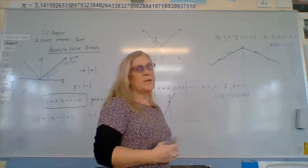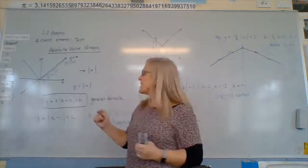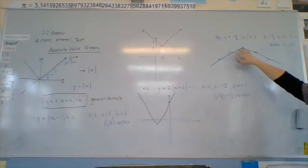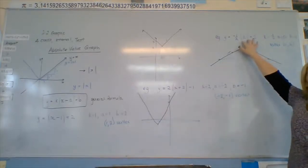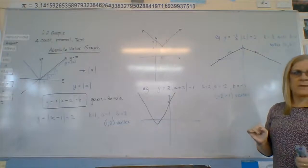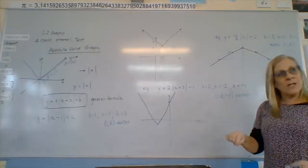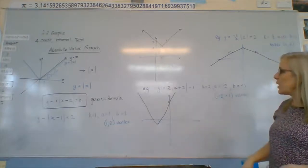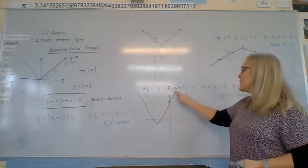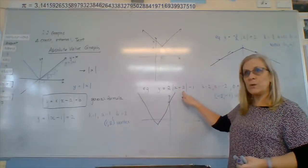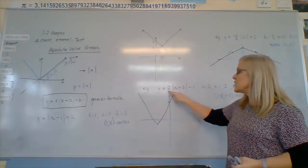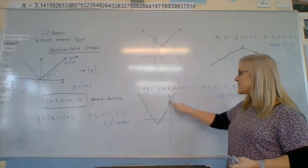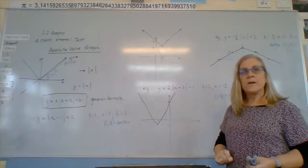If we get stuck and we're not quite sure, then what we should do is plot a point. So we should go, okay, I'm going to put zero in here. Zero plus two is two. Two is positive, so I don't have to worry about that. Two times two is four. Minus one is three. So at zero, it's going to go through at three.